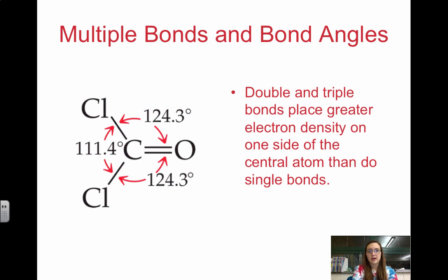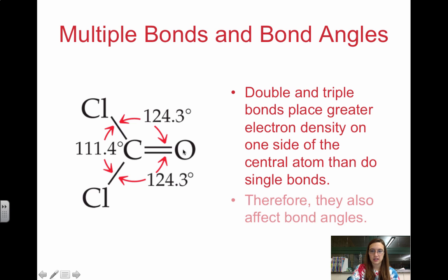Double and triple bonds place greater electron density on one side. In this molecule, this CO double bond actually has a higher electron density, which will push these chlorine atoms together a little bit more than the distance from the oxygen to the chlorine, just because of the extra electron density.